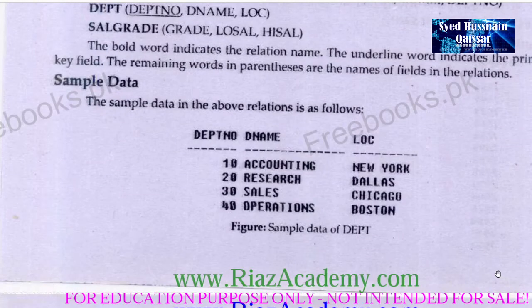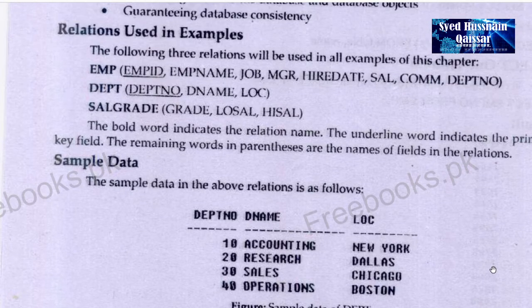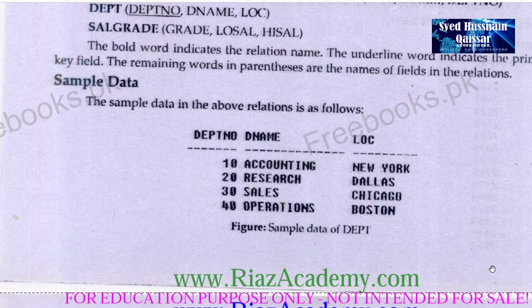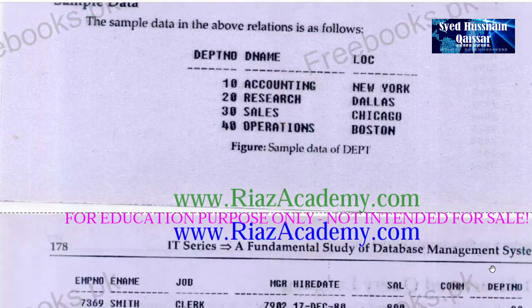Sample data for the Department relation: department number 10, name Accounting, location New York; department number 20, Research, Dallas; department number 30, Sales, Chicago; department number 40, Operations, Boston.